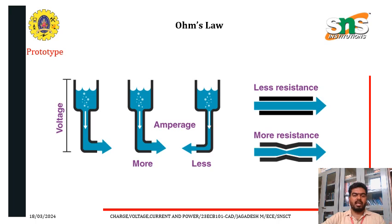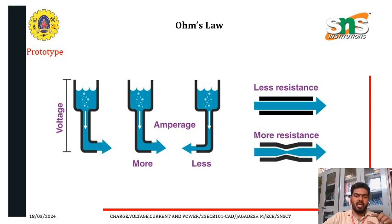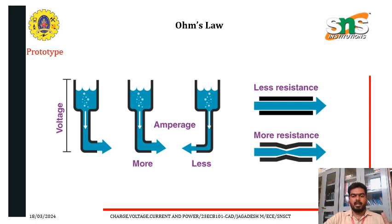A very good example — a prototype for understanding Ohm's law — is a water tank. The water tank is full of water and at the bottom there is an outlet. The pressure being applied by the water is considered as voltage, and the outlet flow — measured in amperes — is the current. Based on the hose or pipe diameter, more or less water will be delivered outside. Less resistance means more current and more resistance means less current.